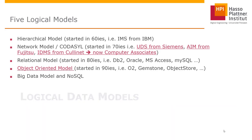Let's talk about the logical data models. It began, as I already mentioned, with the hierarchical model, starting in the 1960s. Afterwards a second model was invented — the network model, also called the CODASYL model, with implementations such as UDS from Fujitsu Siemens, AIM from Fujitsu, IDMS from CaliNet, Computer Associates, and others. The third is the relational model, which started in the 1980s and gets really big interest today. Most database implementations today work with the relational model.